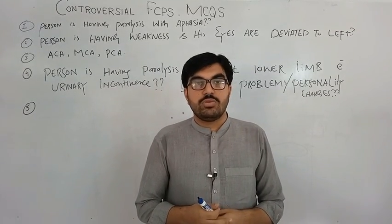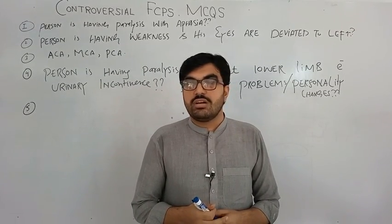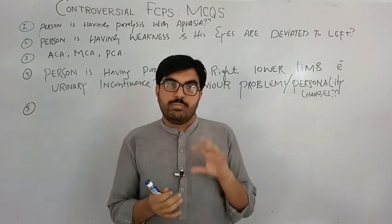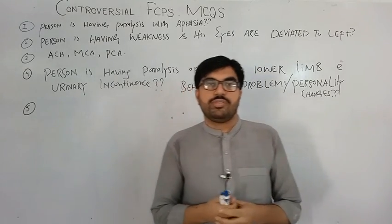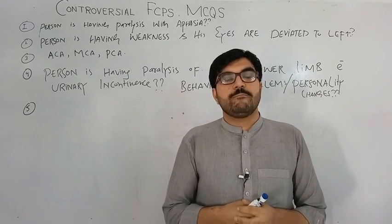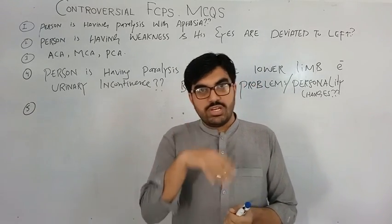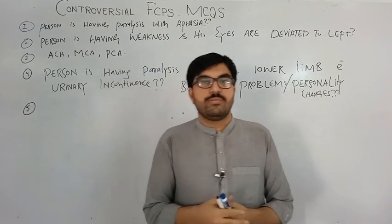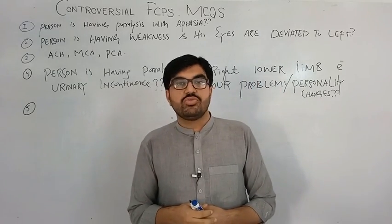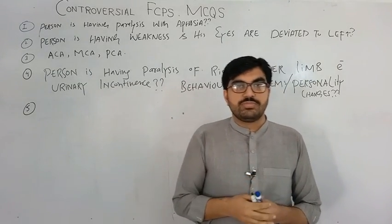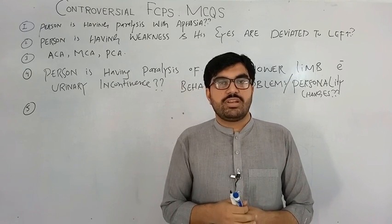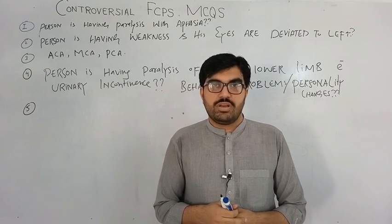All extra-ocular muscles attached to the eye cause a combination of movements. The only muscle that causes a single movement is the lateral rectus, because it is attached along the axis. That is why its paralysis causes horizontal gaze palsy only.